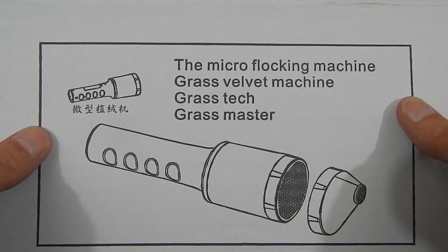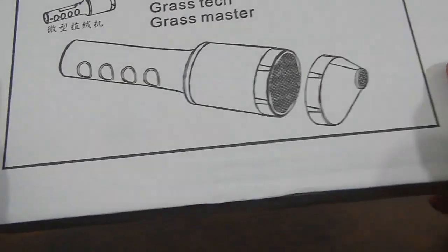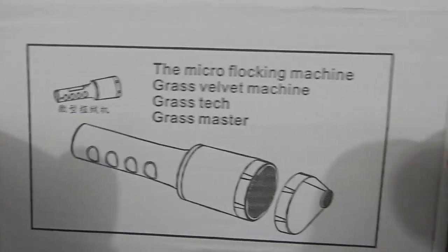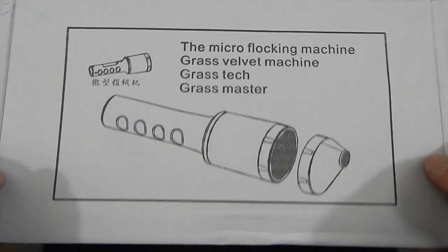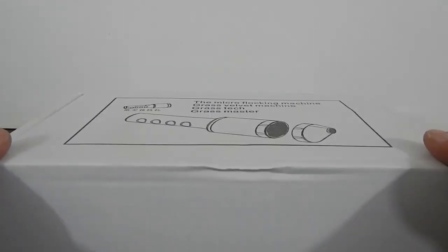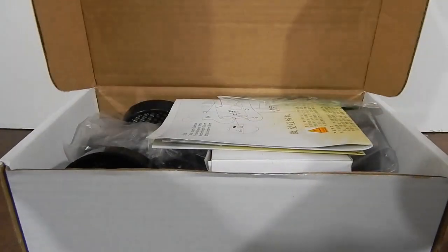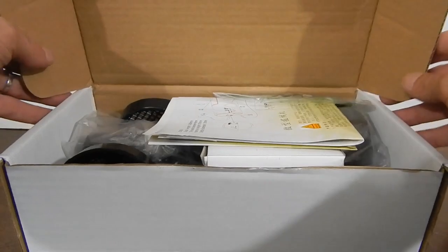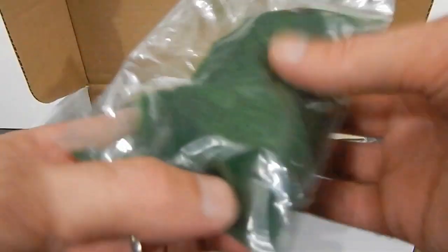I picked up this micro flocking machine. So this is something I picked up on eBay. It's really aimed at doing flocking where you would make grass for railroads. So it's a portable unit. I'm going to take a look at it and see if I can use it for the purposes of reflocking my G.I. Joe's, which I'm thinking I should be able to.